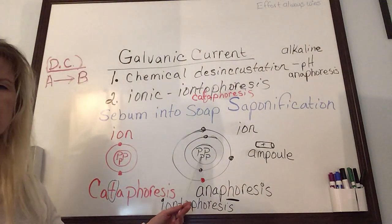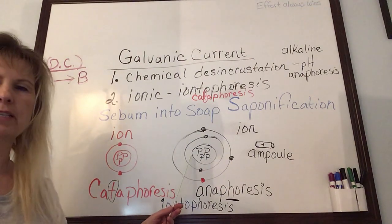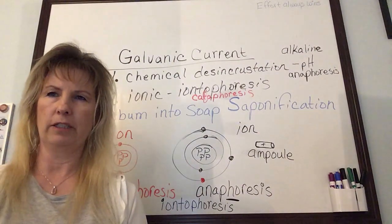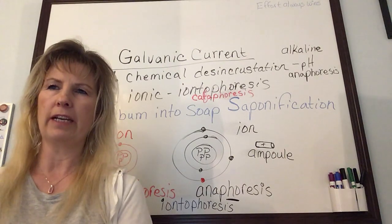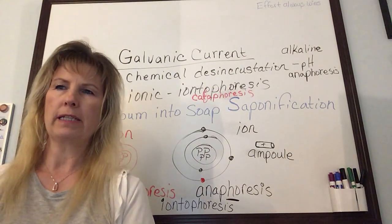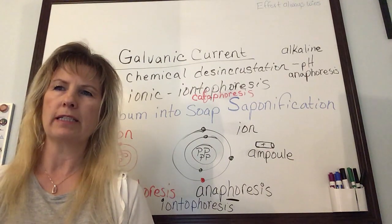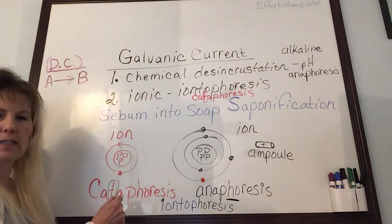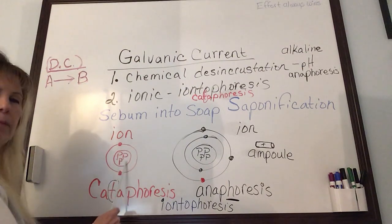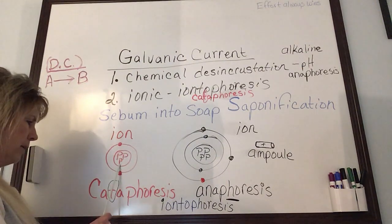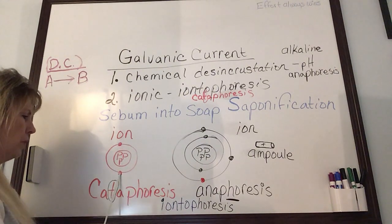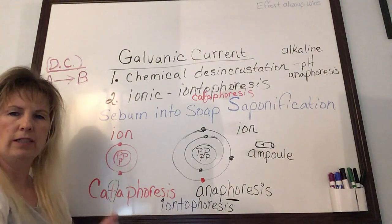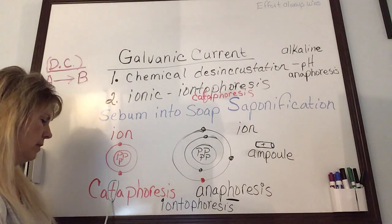An ion is an atom or molecule that carries an electric charge. The current flows through the conductive solution from both positive and negative polarity. This process is known as ionization — the separating of a substance into ions. For example, an atom with three protons but only two electrons has more positive protons, making it a cation (positively charged).